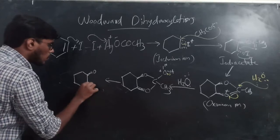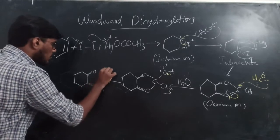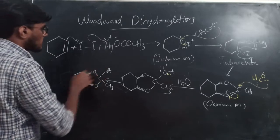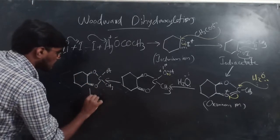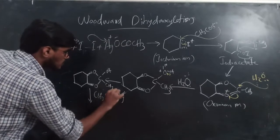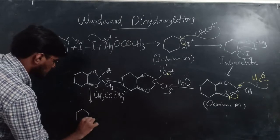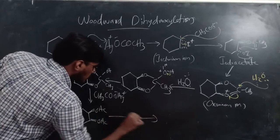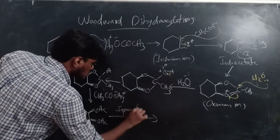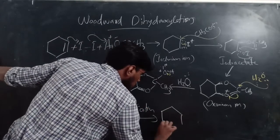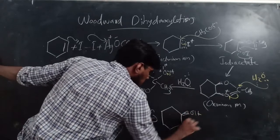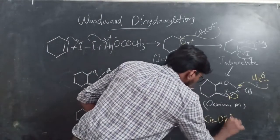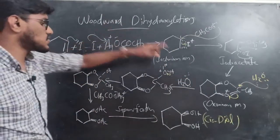This compound reacts with silver acetate (CH3COOAg) to form a diacetate (OAc, OAc) where both acetate groups are on the same face. On saponification, this gives a product with OH and OH groups — a cis-diol. In Woodward dihydroxylation, cis-diol is the product, whereas in Prevost dihydroxylation, trans-diol is the product.